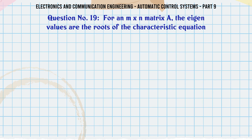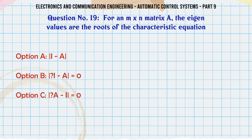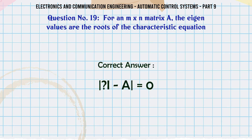For an n×n matrix A, the eigenvalues are the roots of the characteristic equation: A. |I - A|, B. |I - A| = 0, C. |A - I| = 0, D. |A - I|. The correct answer is: |λI - A| = 0.